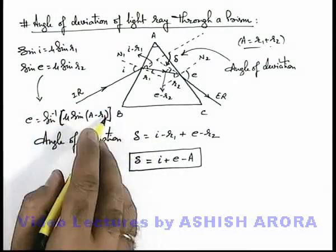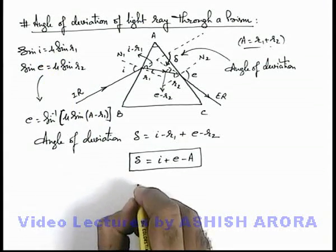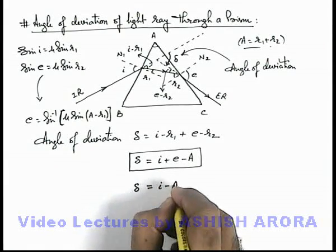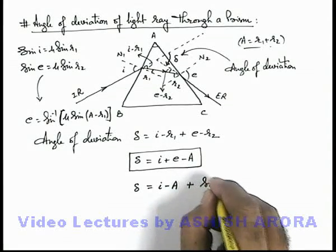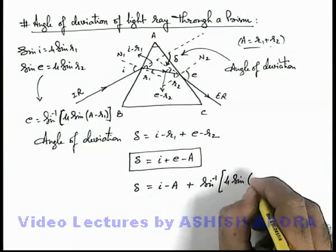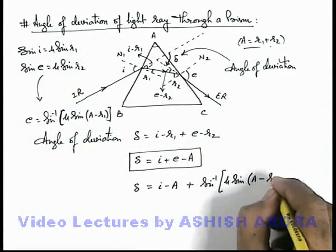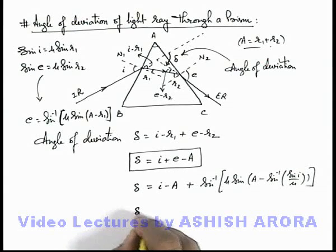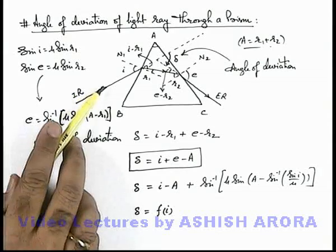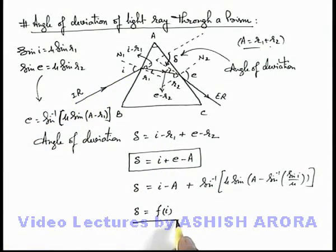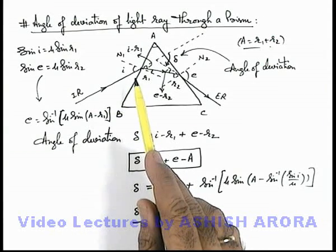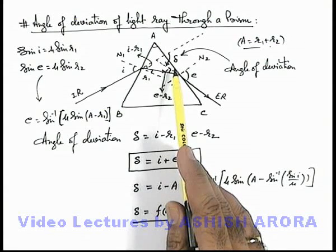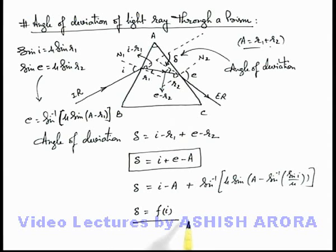So we can write delta in terms of i only: delta equals i minus A plus e, where e equals sine inverse of mu sine(A minus r1), and r1 can be substituted as sine inverse of (sine i divided by mu). As you can see, the deviation angle is a function of the angle of incidence of light on the first refracting surface. As the angle of incidence changes, the value of the angle of deviation also changes. We will continue on the next sheet to study how the angle of deviation depends on and varies with the angle of incidence i.